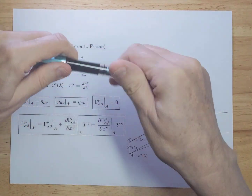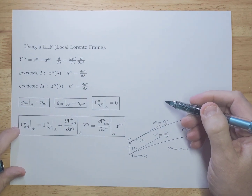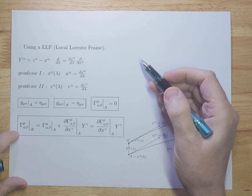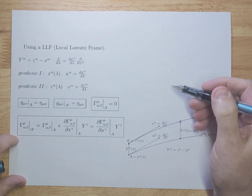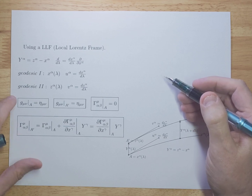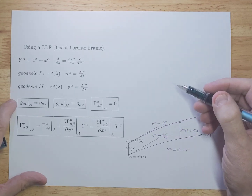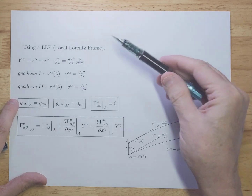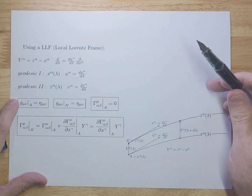Today I'm going to talk about geodesic deviation. We already did a one-parter, and I will put a link in the description below to refer to that one. In this one, I'm going to calculate the geodesic deviation in a slightly different manner. In the last video, I did it in full generality, but here I'm going to go into a local Lorentz frame and calculate geodesic deviation based on that.